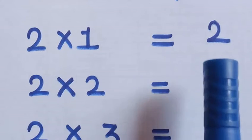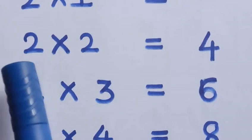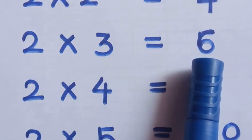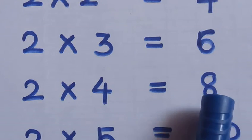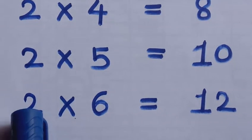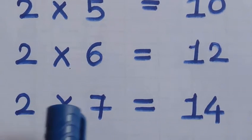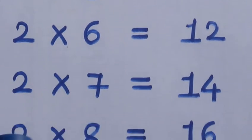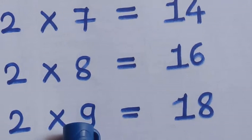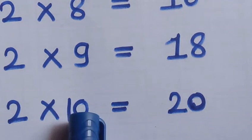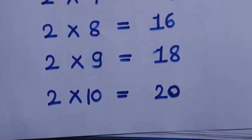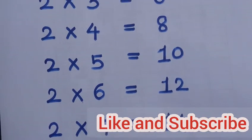Two eights are... two eights are... two nines are... two nines are... two tens are twenty. Yeah, very good! This one is really, really simple.